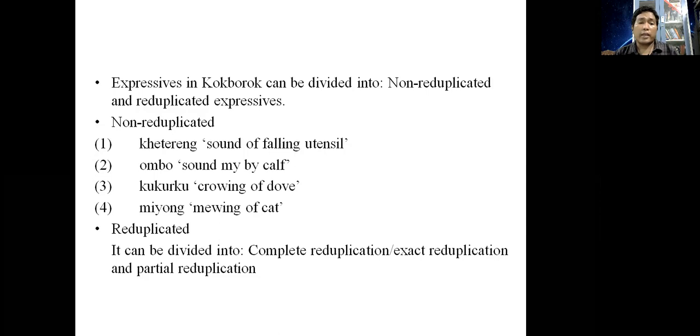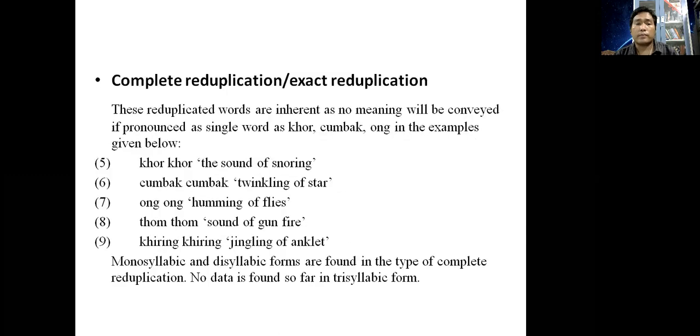In reduplicated expressives, we can divide into complete reduplication or exact reduplication and partial reduplication. In complete or exact reduplication, the reduplicated words are inherent and no meaning will be conveyed if pronounced as a single word. Examples include khor khor 'sound of snoring', chumbak chumbak 'twinkling of a star or light', ong ong 'humming of flies', thum thum 'sound of gunfire', and kring kring 'jingling of anklets'.